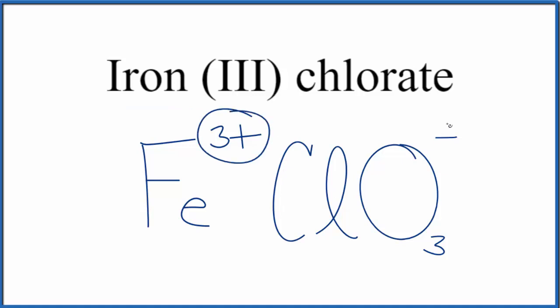We need to make sure these charges here balance. So we have a 3+ and a 1-. If we had three of these chlorate ions, 3 times 1-, that's 3-. That would balance the 3+.